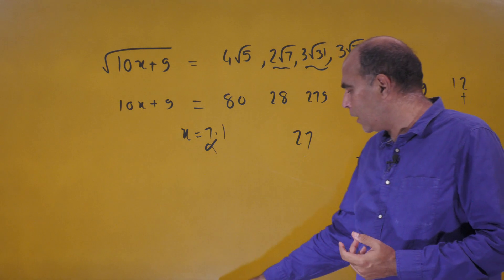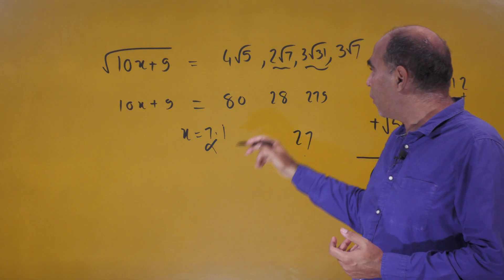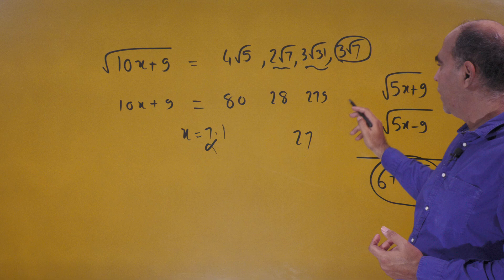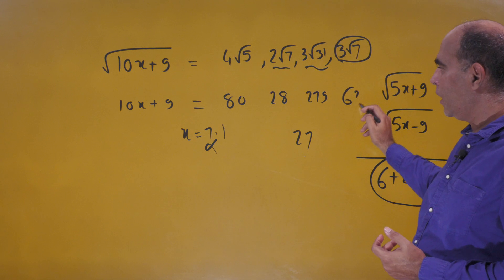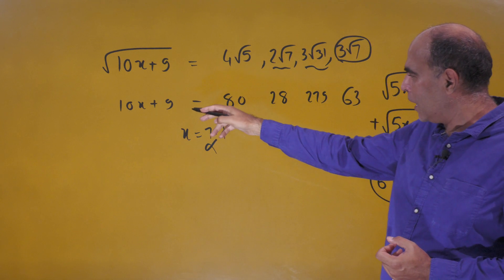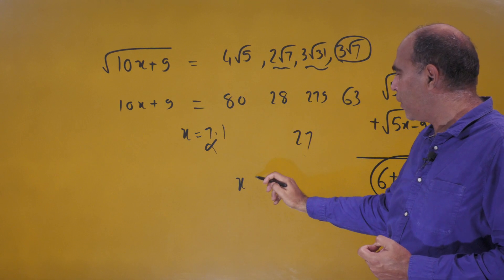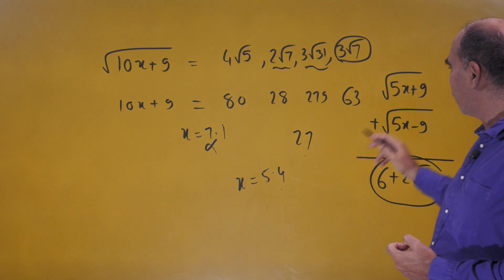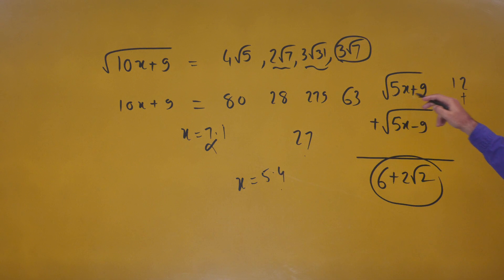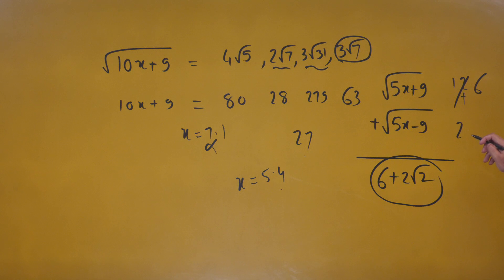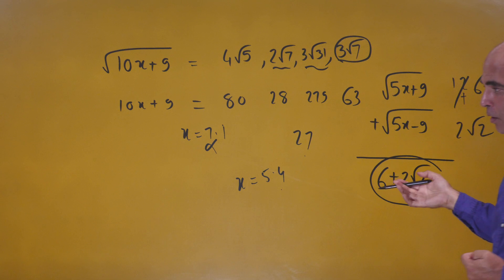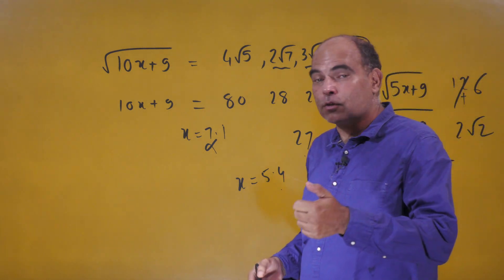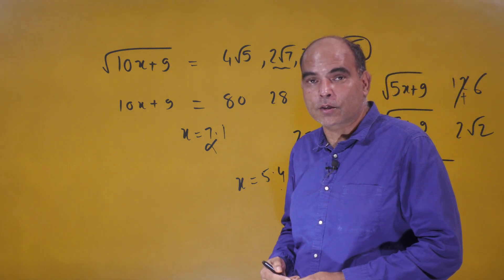It has to be the fourth option, 3√7. Plugging in: 10x + 9 = 63, so x = 5.4. Substituting x = 5.4, I get √36 = 6 and √18 = 2√2 — and I get the solution! Do follow for more. I hope you enjoyed the solution. Thank you so much, bye bye!